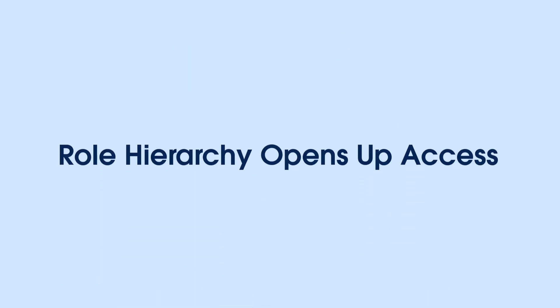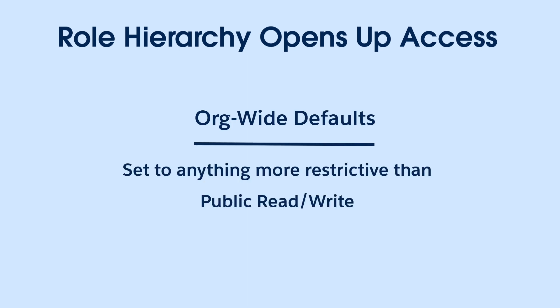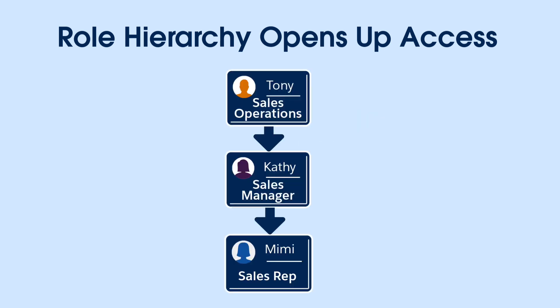You can use the role hierarchy to open up record access when the org-wide default is set to anything more restrictive than public read-write. By default, users have access to the records owned by anyone below them in the role hierarchy. However, this access can be changed for custom objects.